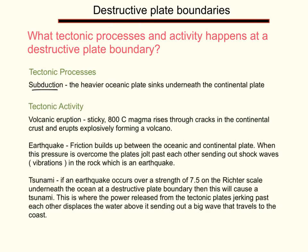There are also three tectonic activities that occur at a destructive plate margin. The first one is a volcanic eruption. This is where sticky, 800-degrees-Celsius magma rises through cracks in the continental crust, erupting violently onto the continental crust and forming a volcano.